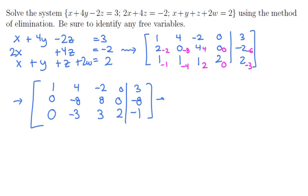Notice that the second row could be scaled by negative one-eighth to get 0, 1, minus 1, 0, 1. And the bottom row could be scaled by a negative 1 to obtain 0, 3, negative 3, negative 2, 1, and the top row unchanged.